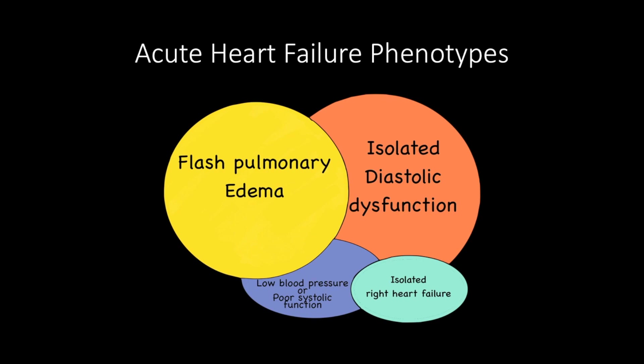Another phenotype is flash pulmonary edema, which presents with B-lines and a plethoric IVC. However, you can observe a normal or only minor reduction in systolic function. These patients have an acute presentation and have a redistribution problem.